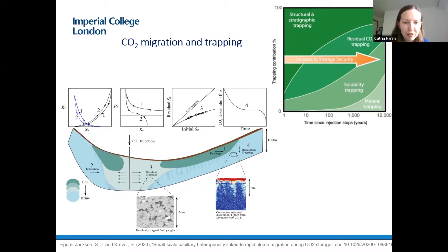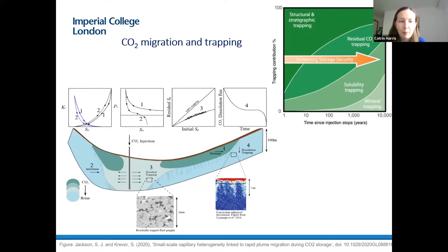Over further time we have dissolution and eventually mineralization. This mineralization is more commonly associated with highly reactive basalts in Iceland, where you see this process very quickly. The figure on the bottom left shows some of the key multi-phase flow properties that affect flow, including constitutive relationships such as relative permeability, capillary pressure, and initial residual trapping characteristics.